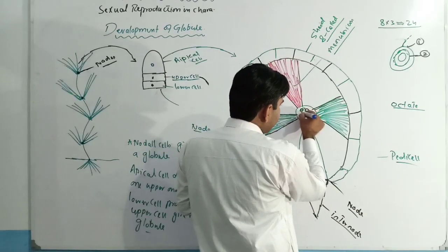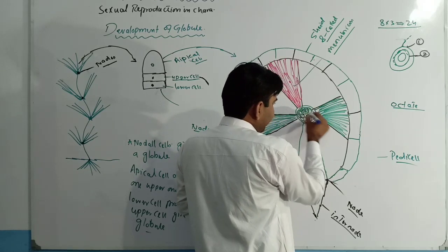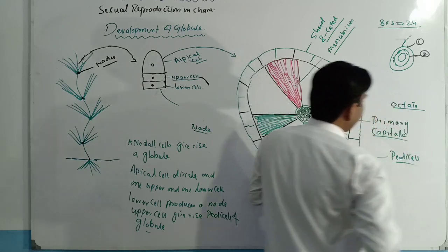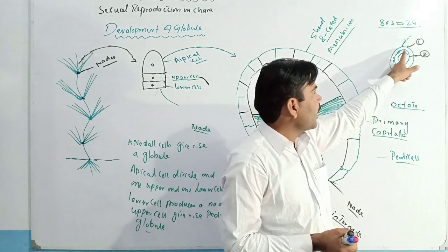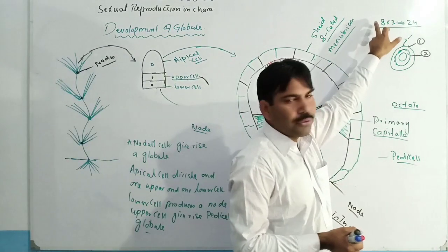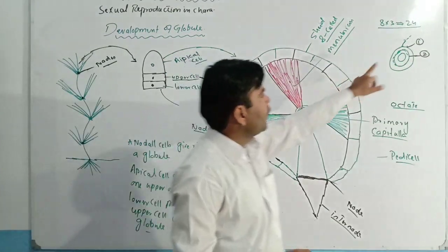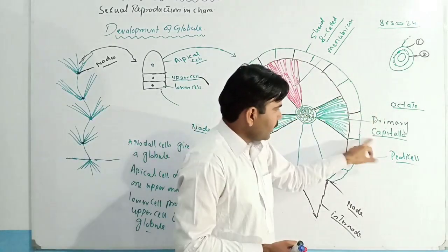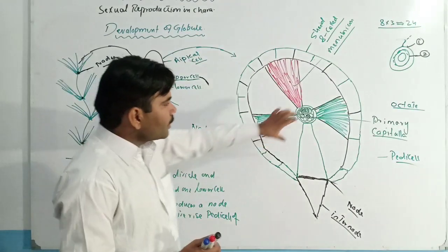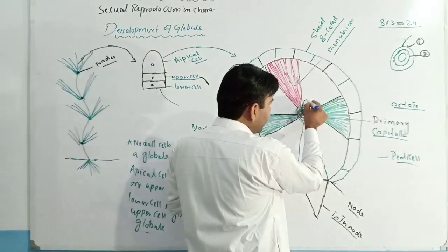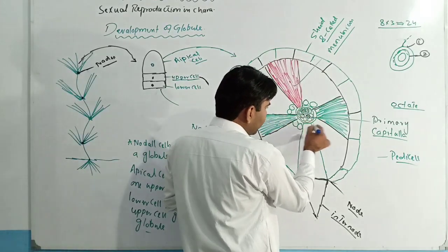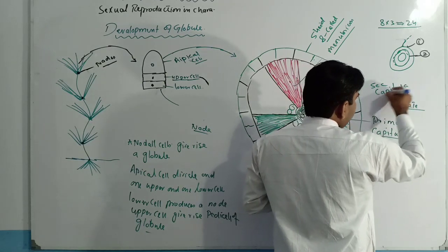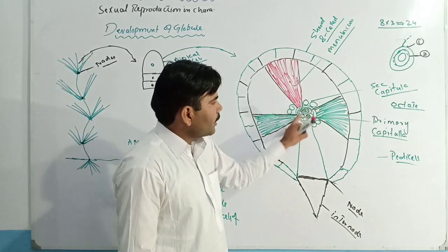At the inner position there is a structure known as the primary capitula. This primary capitula is formed from the inner cells, which are produced as a result of the division of the 8 cells. So three layers: the outer layer gives rise to the shield, the middle layer gives rise to the manubria, and the innermost layer gives rise to the primary capitula. These are formed from the division of the primary capitula.